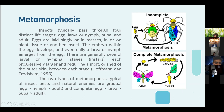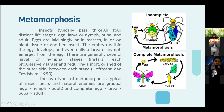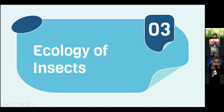In metamorphosis, insects typically pass through four distinct life stages: egg, larva or nymph, pupa, and adult. Eggs are laid singly or in masses in or on plant tissues or other insects. The embryo develops and a larva or nymph emerges. There are generally several larval or nymphal stages, each progressively larger, requiring molting of the outer skin between stages. The two types of metamorphosis typical of insects are: gradual (egg, nymph, adult) and complete (egg, larva, pupa, adult).